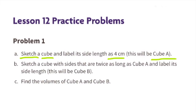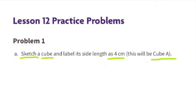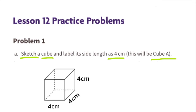Problem number 1, part A. Sketch a cube and label its side length as 4 centimeters. This will be cube A. It's a cube — it's going to have a top, a bottom, a front, a back, a right side, and a left side. The side lengths will all be 4 centimeters. Label it cube A.